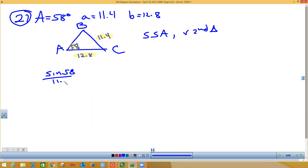We have sine of 58 is to 11.4 as sine of angle B is to 12.8. So we multiply the 12.8 over and get sine of angle B is 12.8 times sine of 58 all over 11.4.